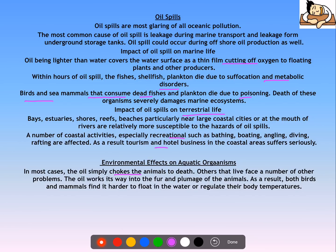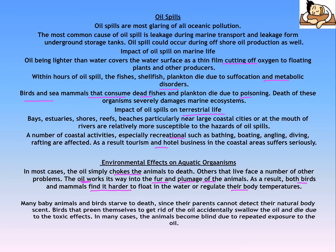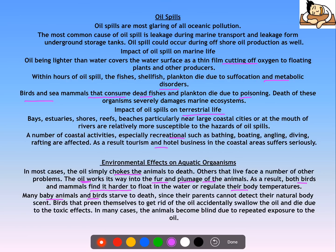Oil finds its way into the fur and plumage of animals, making it harder for birds and animals to float and regulate their body temperature, so they eventually die. Baby animals and birds also die because parents cannot detect their natural body scent. Birds that preen themselves to get rid of oil accidentally swallow it and die due to toxic effects. When other organisms eat these birds, they also die. Animals also become blind due to repeated exposure to oil.